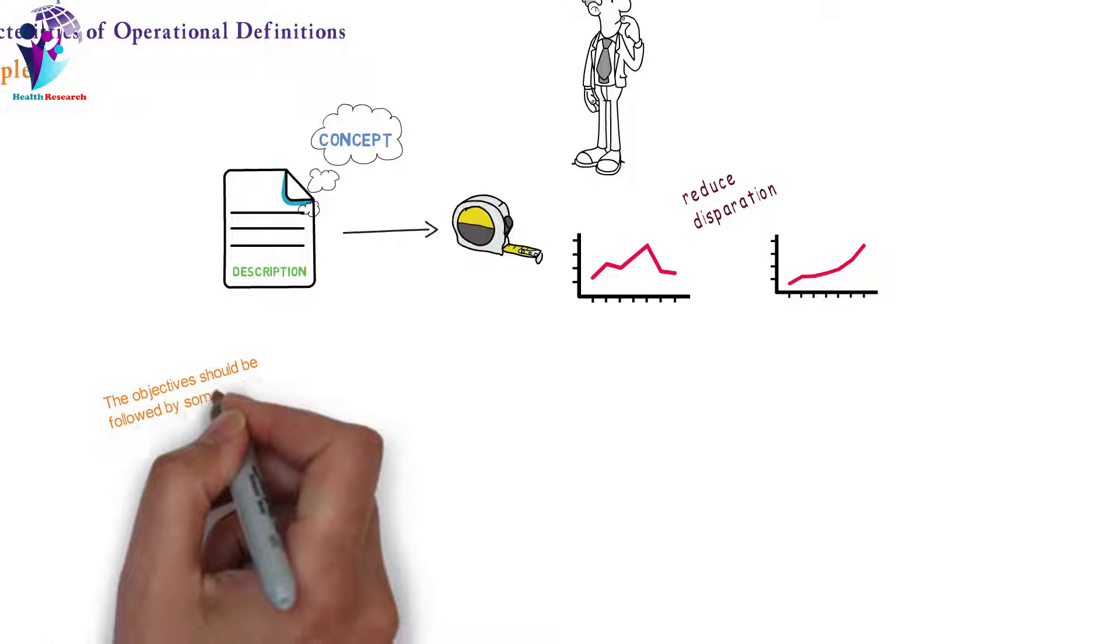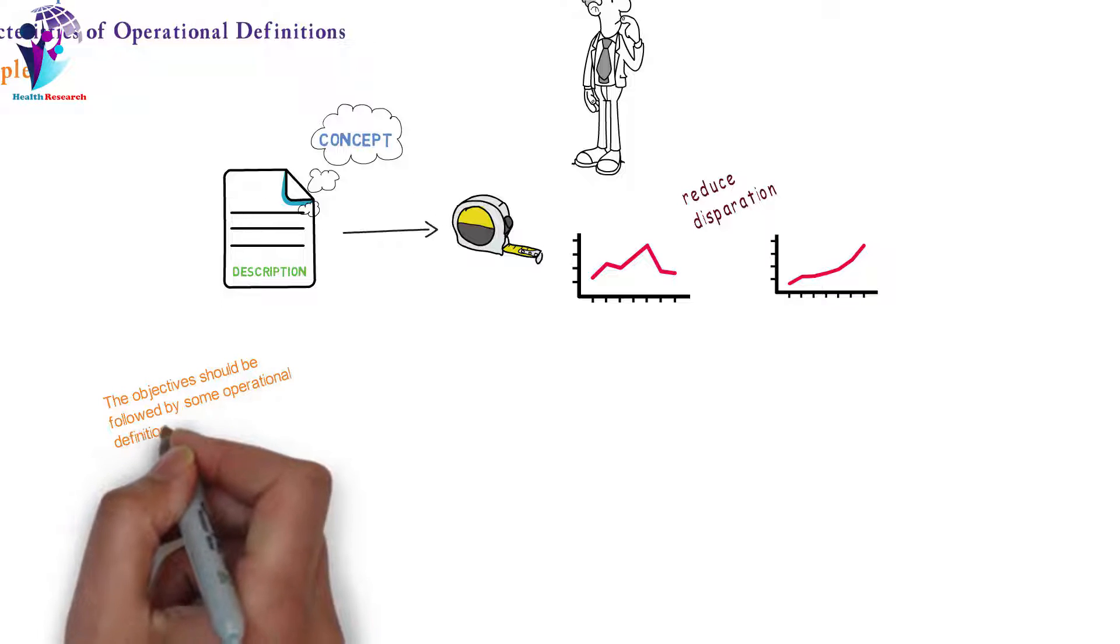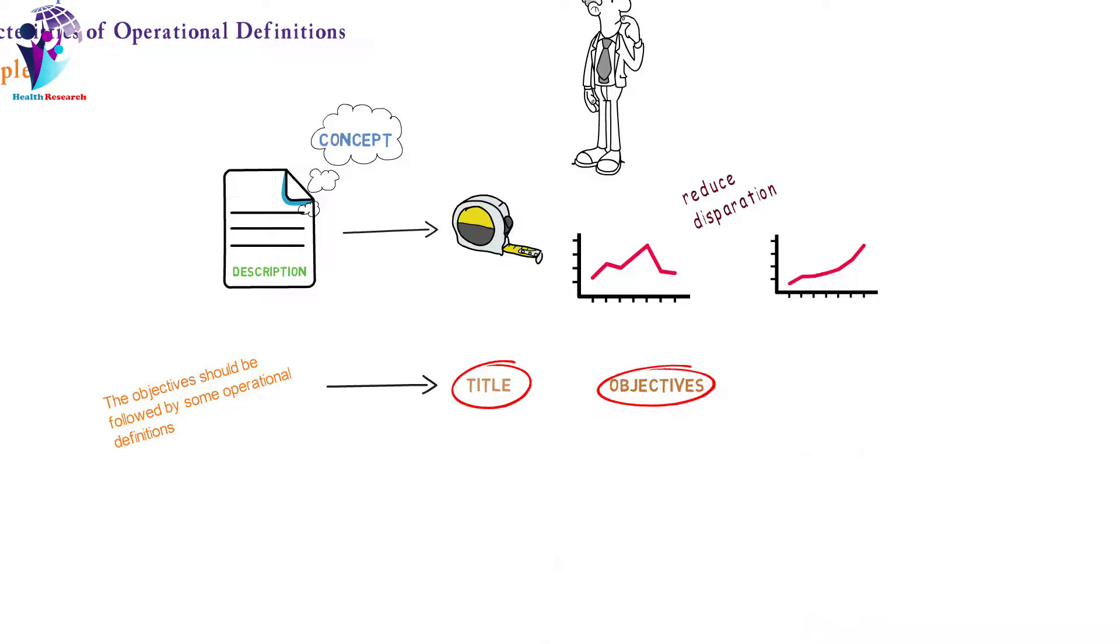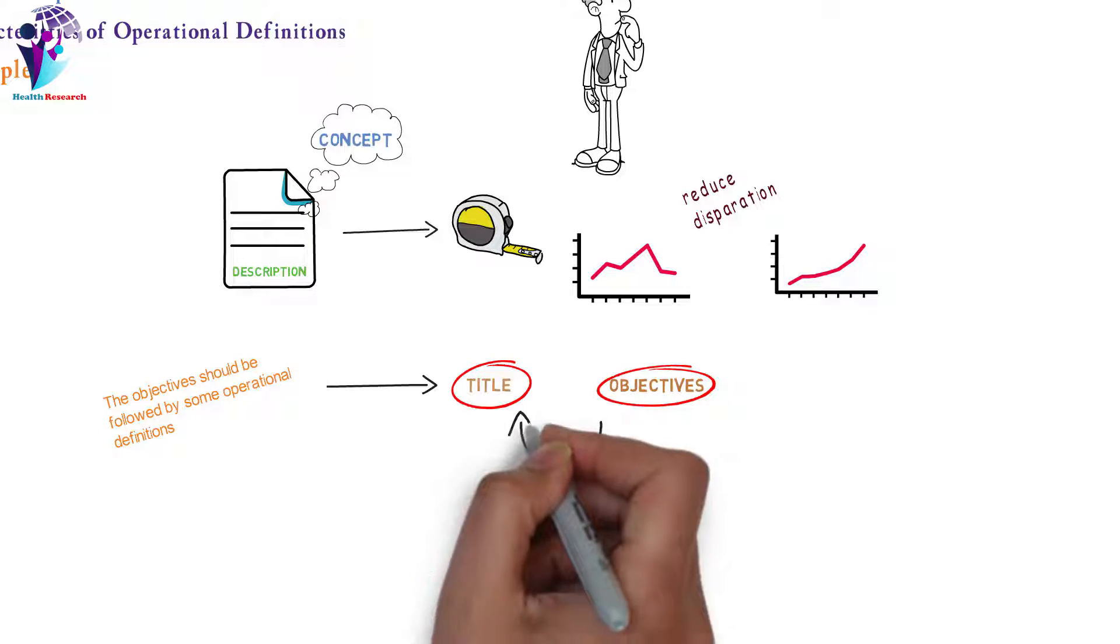The objectives should be followed by some operational definitions. These should be picked from the title and objectives. Include defining your meanings to these terms as you plan to use in your study.